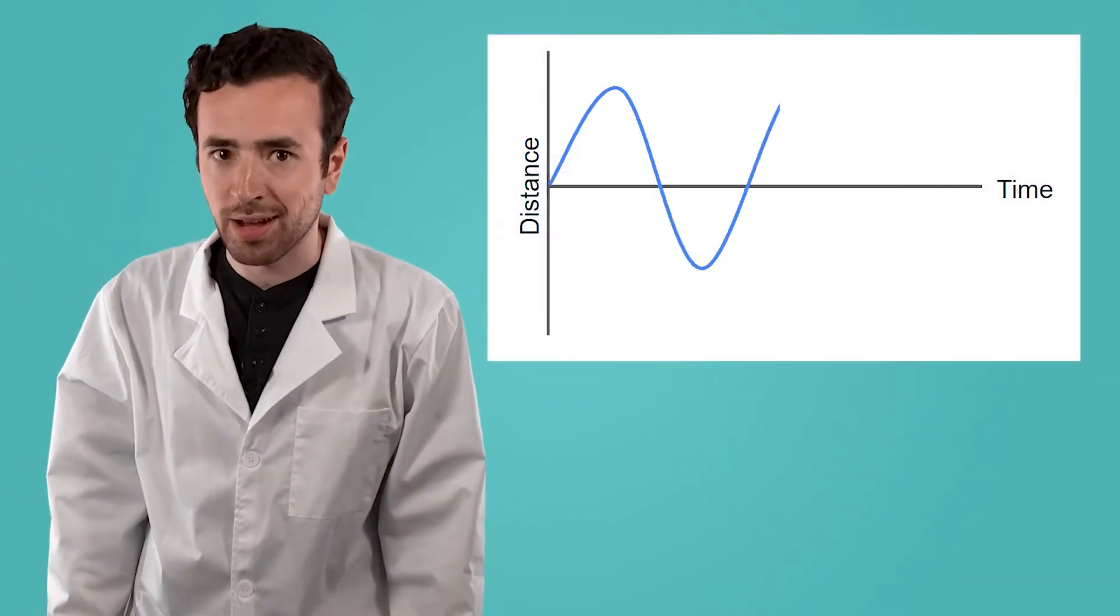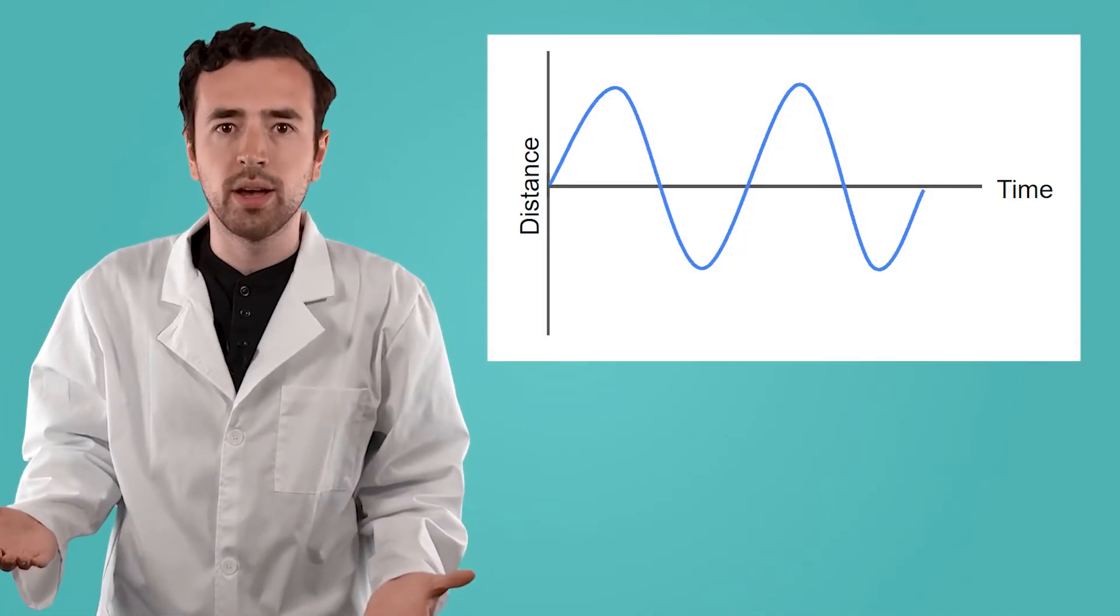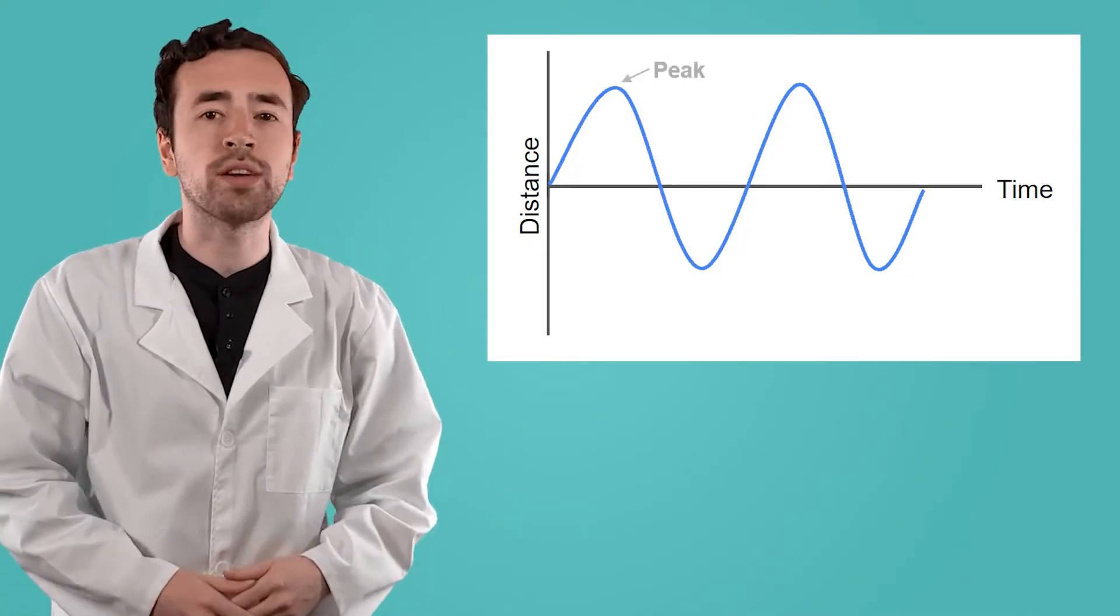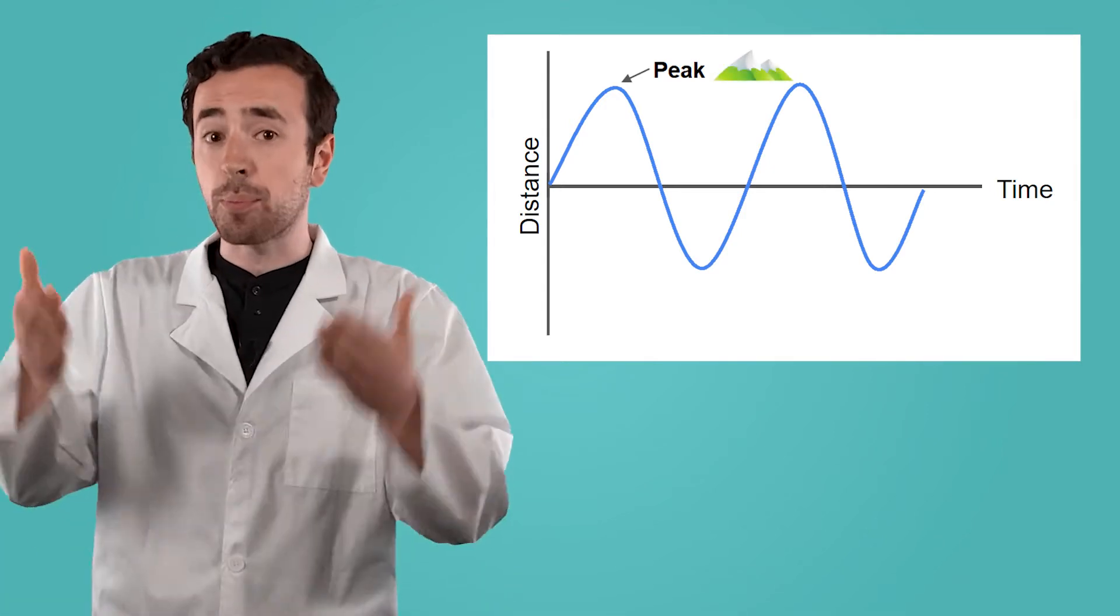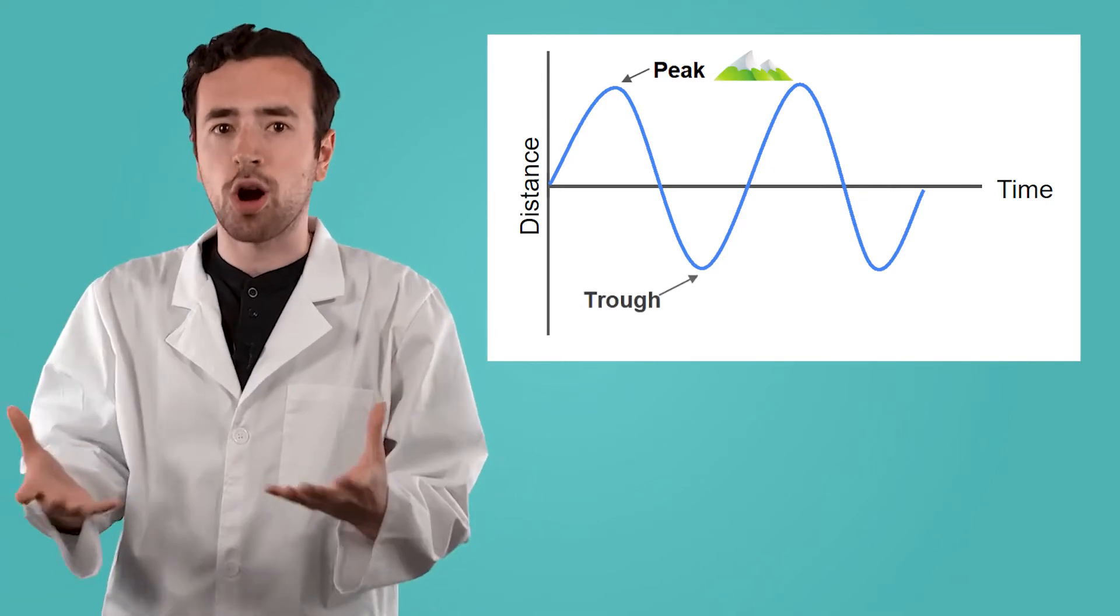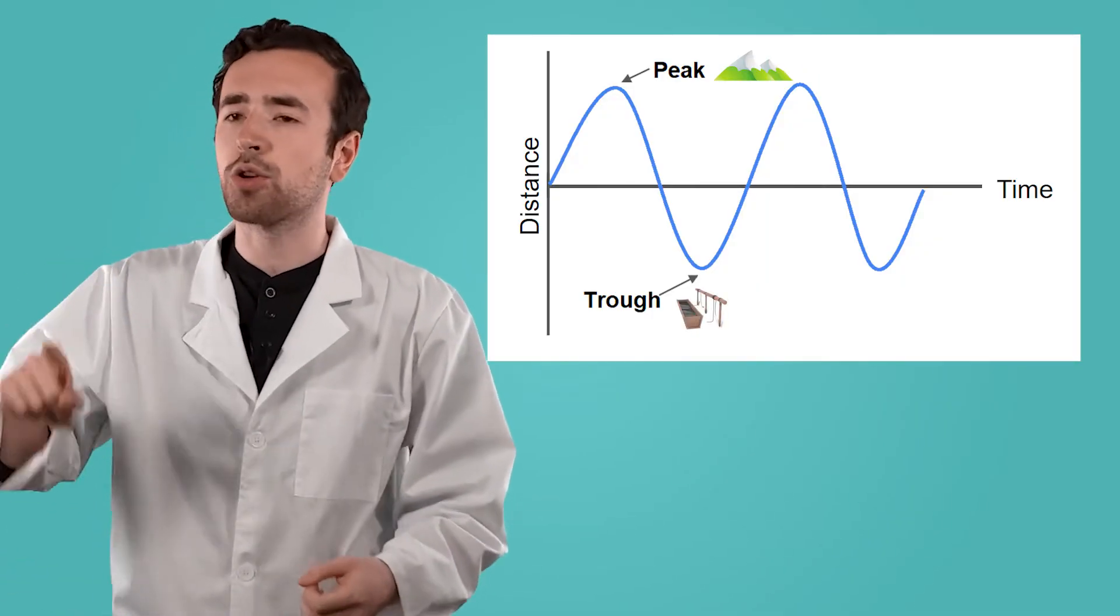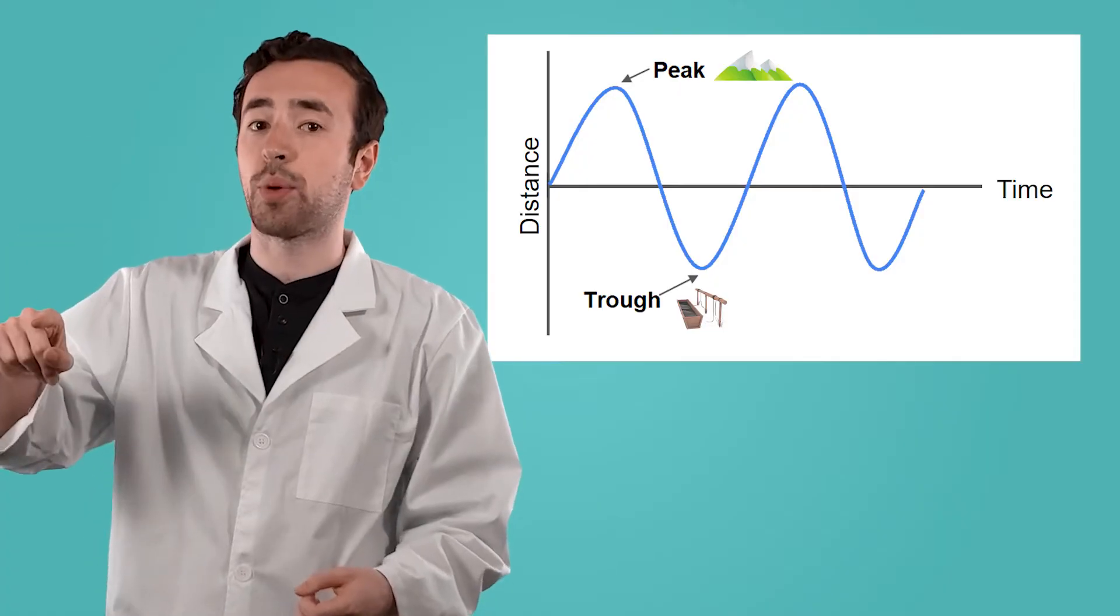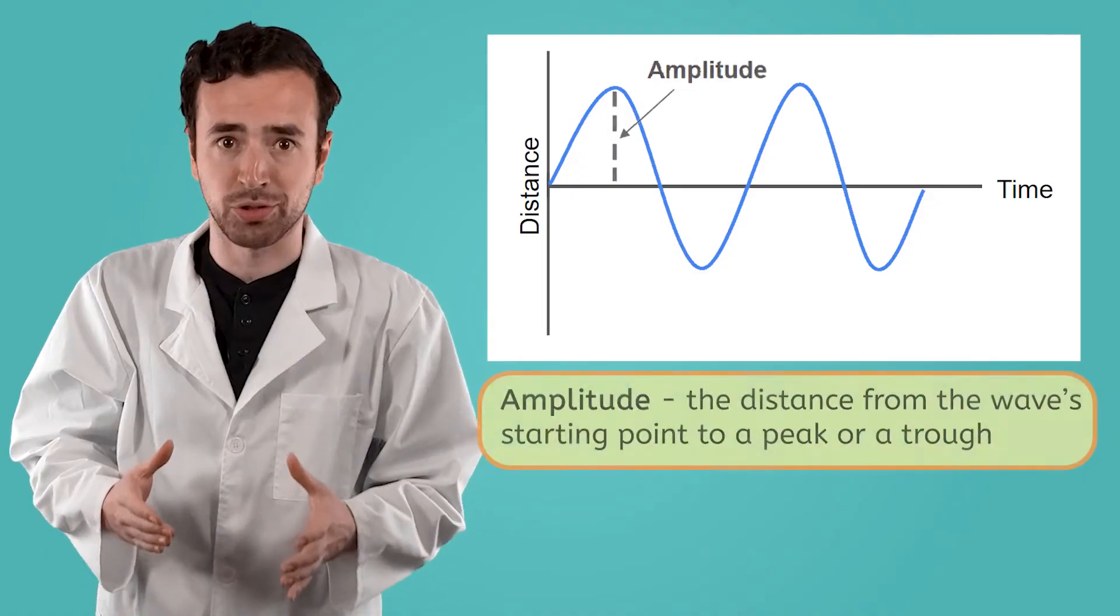By looking at the shape of a sound wave we can learn a lot about what a sound sounds like. For instance, the top of the wave is called the peak, just like the top of a mountain. And the bottom of the wave is called the trough, like what farm animals drink from. How far a particle moves from its starting point to either a peak or a trough is called its amplitude.